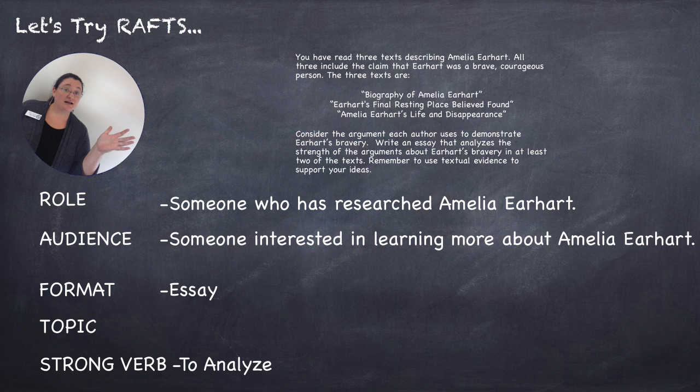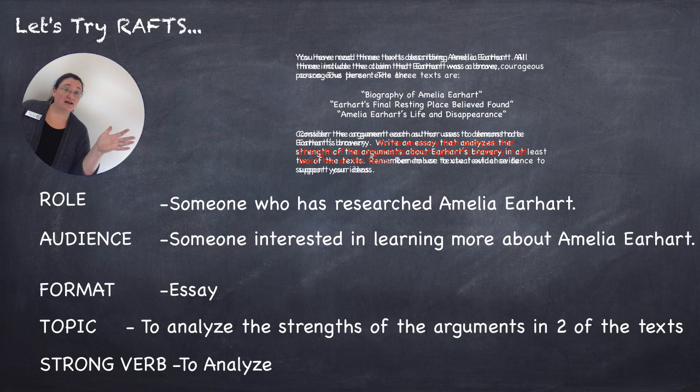The T is my topic. We want to make sure that kids understand the full topic that appears in the prompt. I would have them start where it says 'write an essay' and read the full sentence: 'Write an essay that analyzes the strength of the arguments about Earhart's bravery in at least two of the texts.' We don't want kids to shorten that and miss the piece about the strength of the argument, so make sure they include all of that information in their topic.